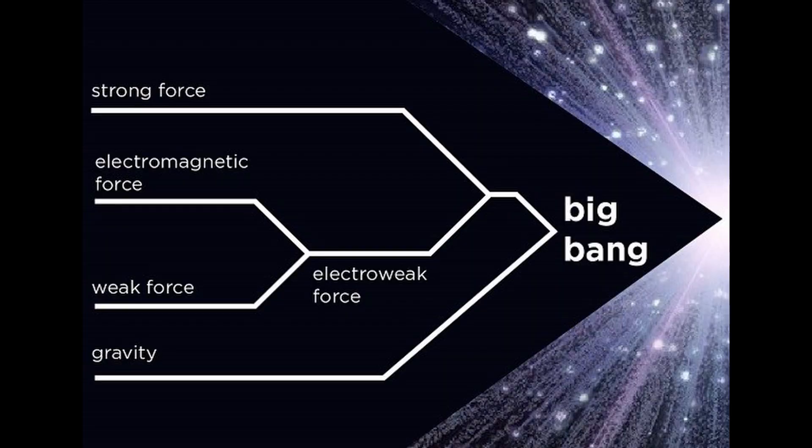The hallmark of the Electroweak Epoch is its name — Electroweak. Throughout this epoch, we have the Electroweak Force, which is a combination of two of the forces we see in our world: the Electromagnetic Force and the Weak Nuclear Force. At a high enough temperature, those two become one, and for this period, the universe is at that high enough temperature.